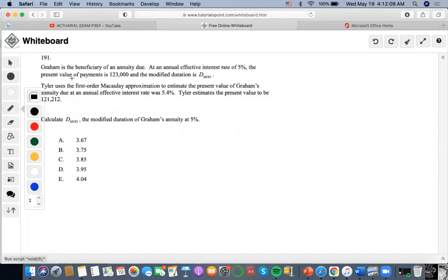Hi, so they're talking about this annuity due and they're saying that the present value of payments is $123,000 and they give us a duration and it goes on and on until they mention the first order Macaulay approximation concept and they want us to calculate the modified duration, right?